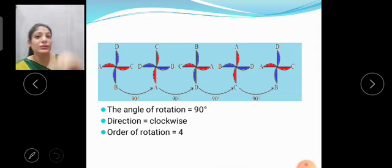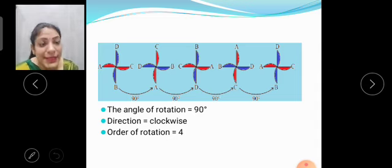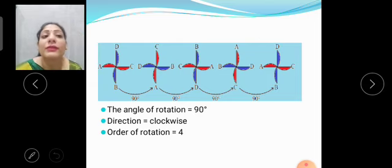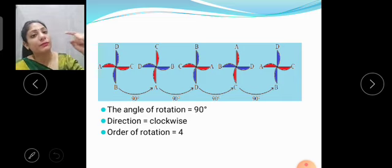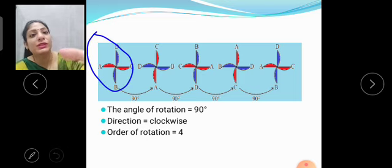When we move it to 90 degrees, the A will become downwards and C will get upwards. Again, when we rotate it, downward is D and upward is B. Again, 90 degrees, downward is C and upward is A. And after 90 degrees, the downward is B and upward is D, which is similar to the first image.